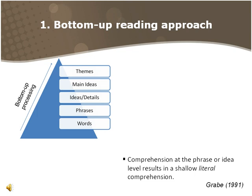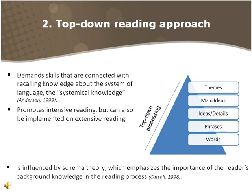Comprehension at the phrase or idea level results in a relatively shallow understanding of what the text directly states. On the other hand, in the top-down reading approach, reading begins from the bigger parts of written speech and moves to the smaller ones. The reader is expected to recognize letters at first, then recognize words, and in the end get the meaning intended by the writer. The top-down approach demands skills connected with systematic knowledge, promotes intensive reading, and is influenced by schema theory.